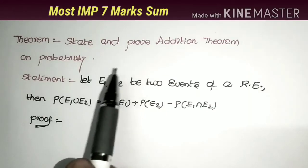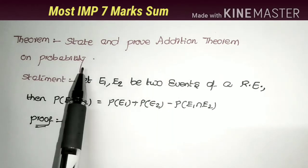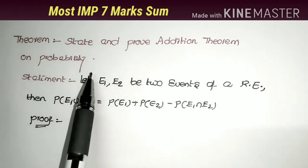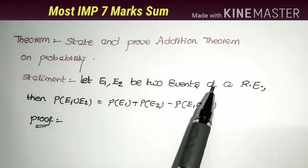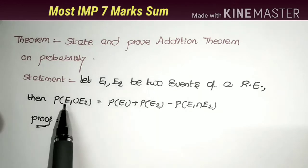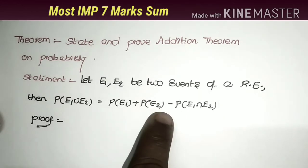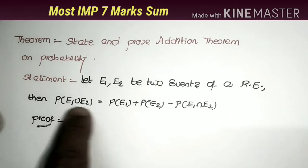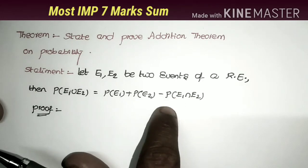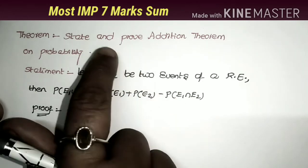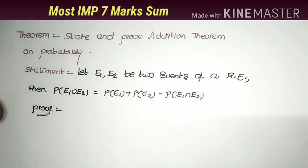In this video I explain the Addition Theorem in Probability. The theorem states: let E1 and E2 be two events of a random experiment. Then P(E1 ∪ E2) = P(E1) + P(E2) - P(E1 ∩ E2). This is the statement. In the examination, the question is like 'state and prove the addition theorem,' so first we write the statement, then the proof.